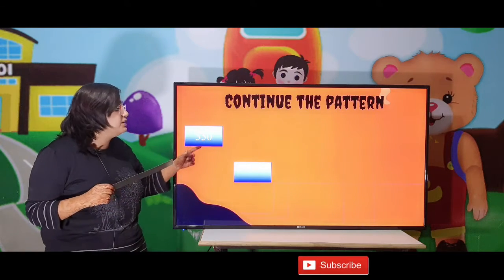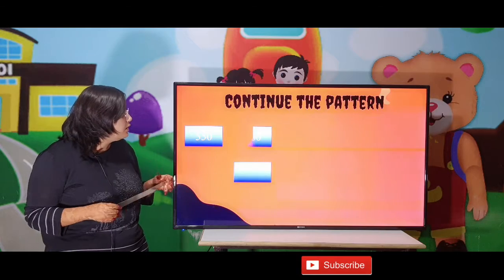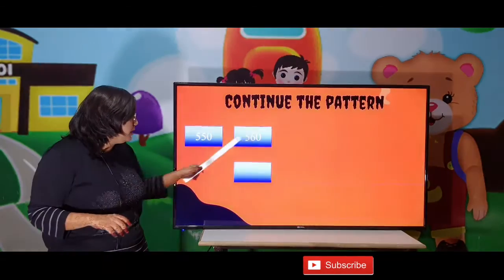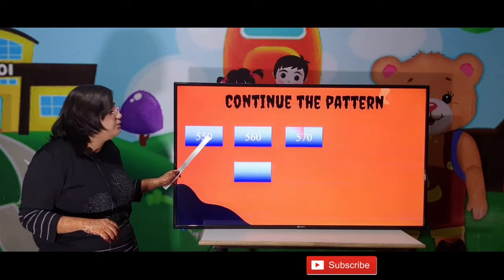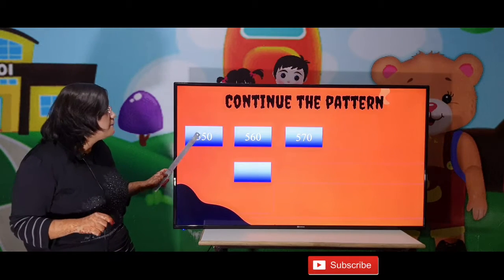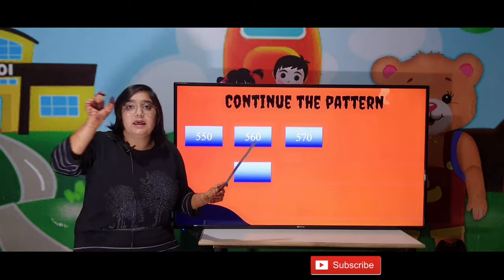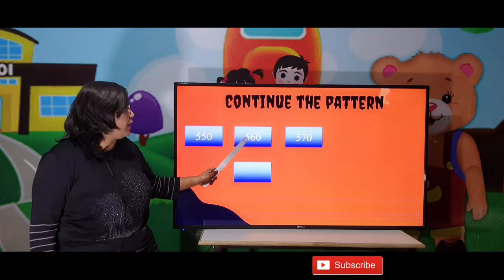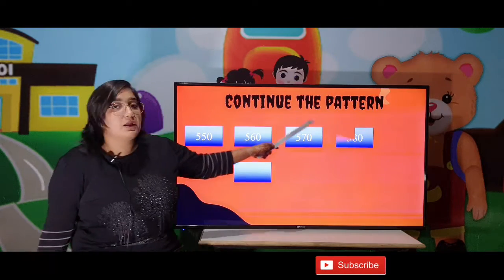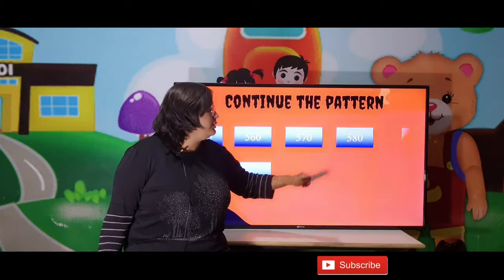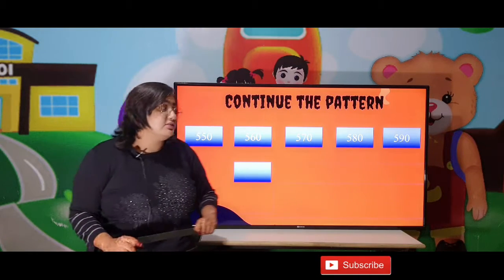Now let us see some other patterns. Here 550 is given, then the second digit is 560. The gap between both is 560 minus 550 equals 10. So the numbers ahead must be written with a gap of 10: 560 plus 10 is 570, 570 plus 10 is 580, and 580 plus 10 gives 590.